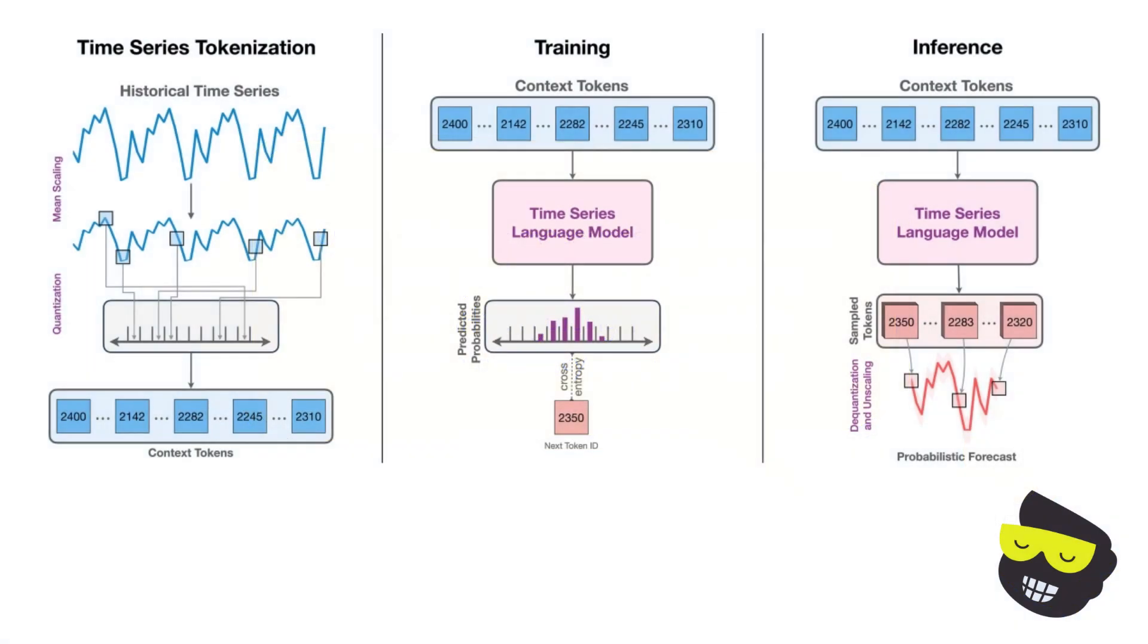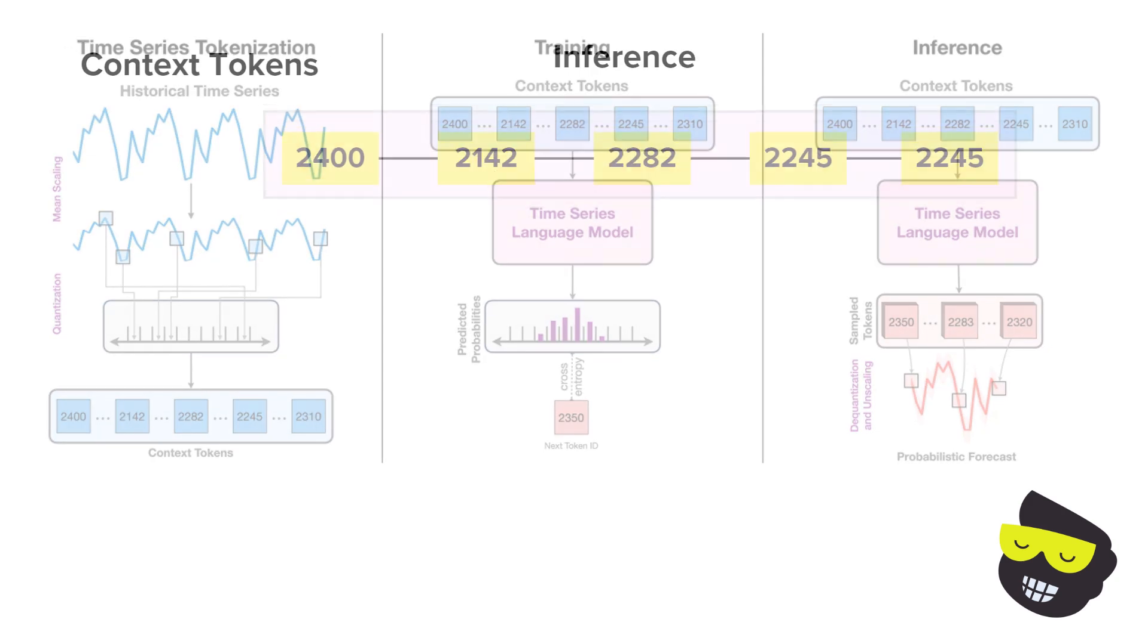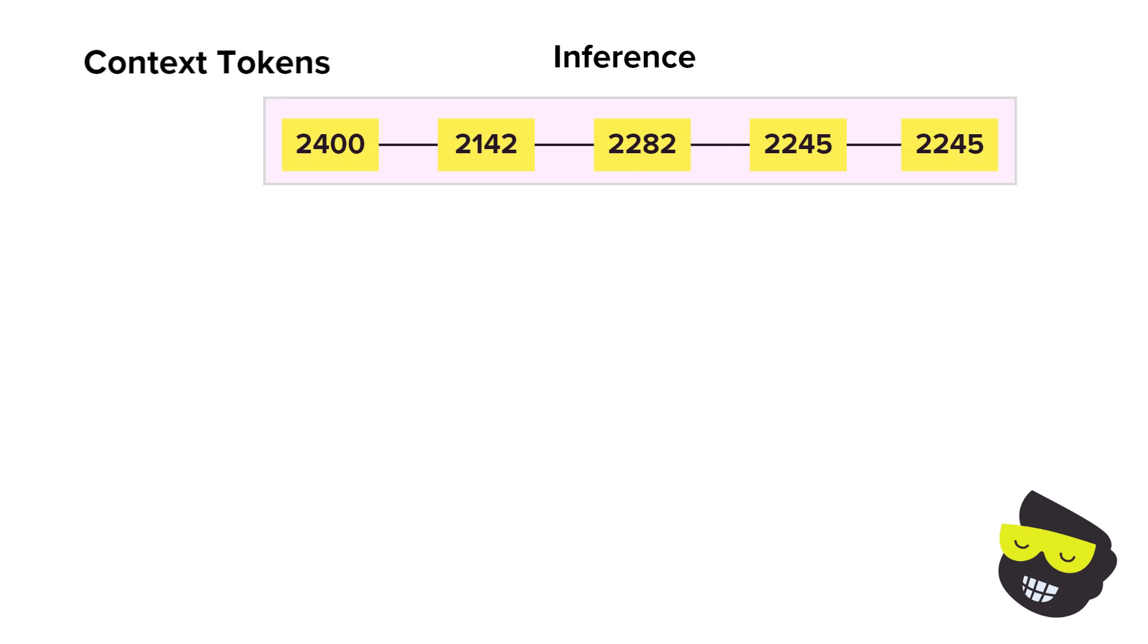Then we have inference. In this phase, the model uses the learned patterns to predict the values. We have the context tokens. So these are the ones that the trained model took in from the historical context at the start of the prediction process. The time series language model in Amazon Chronos leverages the LLM to generate possible future tokens based on the historical context. The sequence of context tokens, which are then quantized representations of the data.